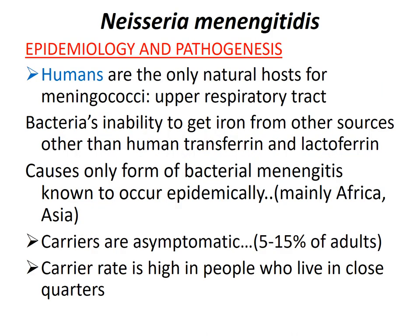The second species we are looking at is Neisseria meningitidis. Human beings are the only natural hosts for meningococci, and carriers harbor the organism in the upper respiratory tract. The bacteria's inability to acquire iron from sources other than human transferrin and lactoferrin is possibly the reason why humans are the only natural hosts. This bacteria causes the only form of bacterial meningitis known to occur epidemically, mainly in Africa and Asia in the meningococcal belt. Studies indicate 5–15% of adults are asymptomatic carriers, with higher carrier rates in people who live in close quarters.